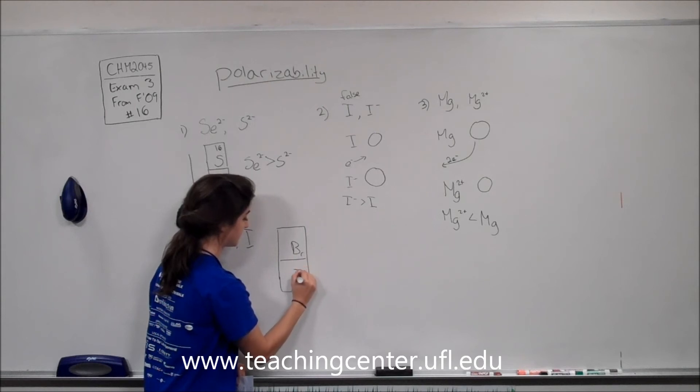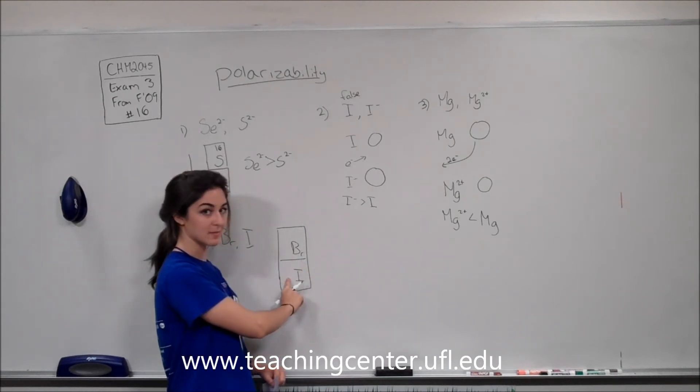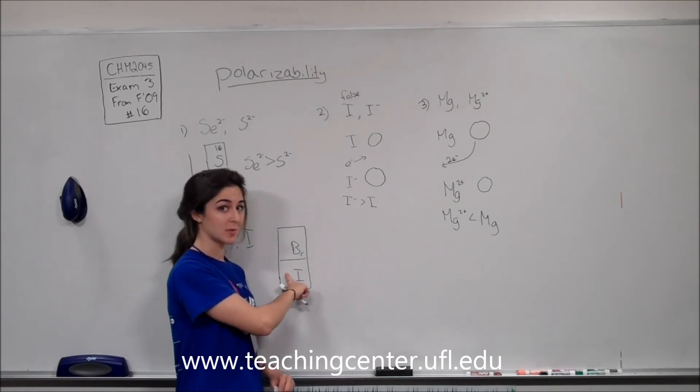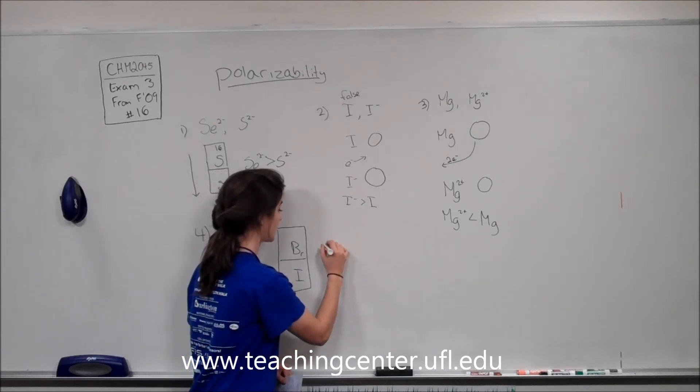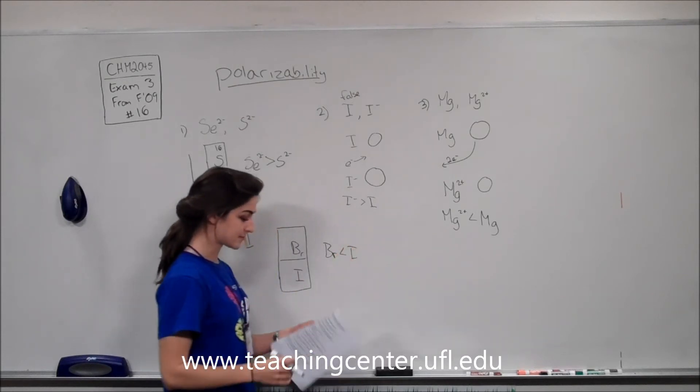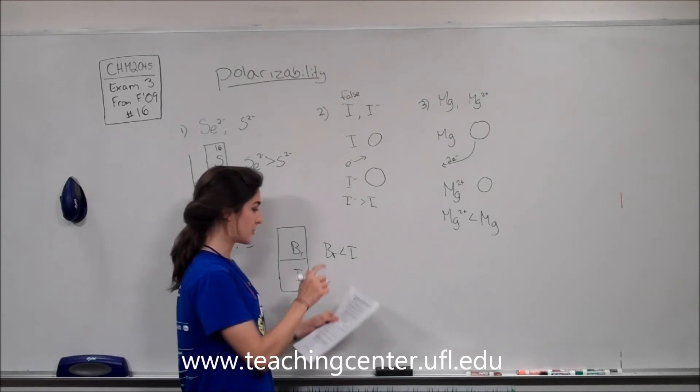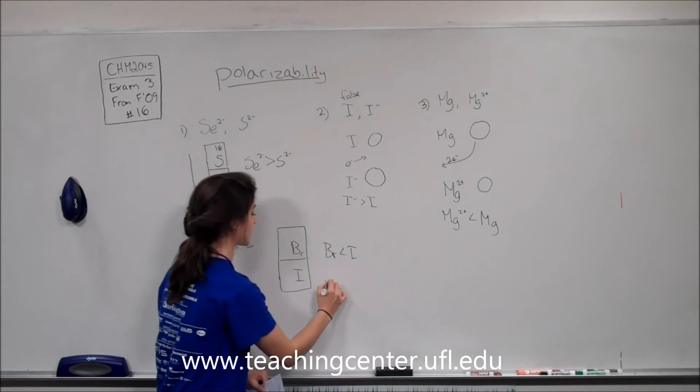Which means that bromine is smaller than iodine because size increases down the table. So this larger atom is going to be more polarizable with its larger cloud. So bromine is less polarizable than iodine. So number 4 we have bromine listed first, which means we're in increasing order. So this one is also false.